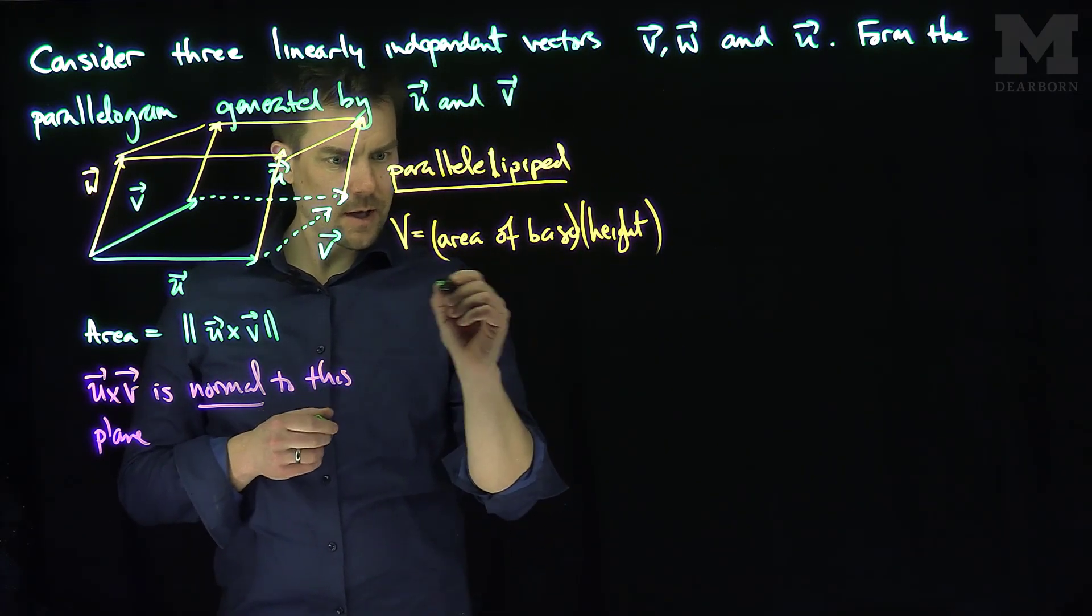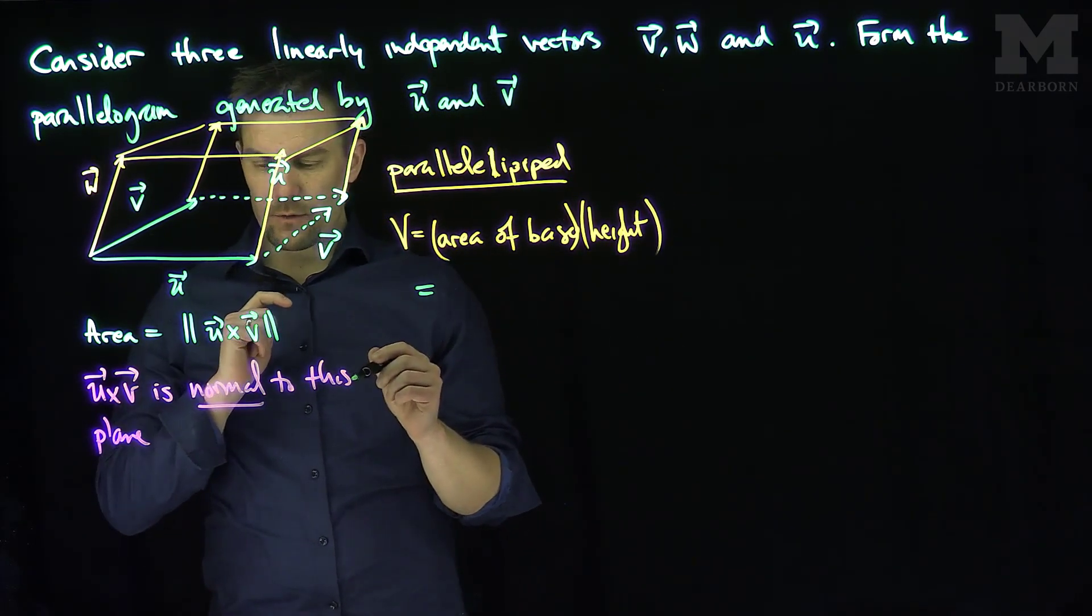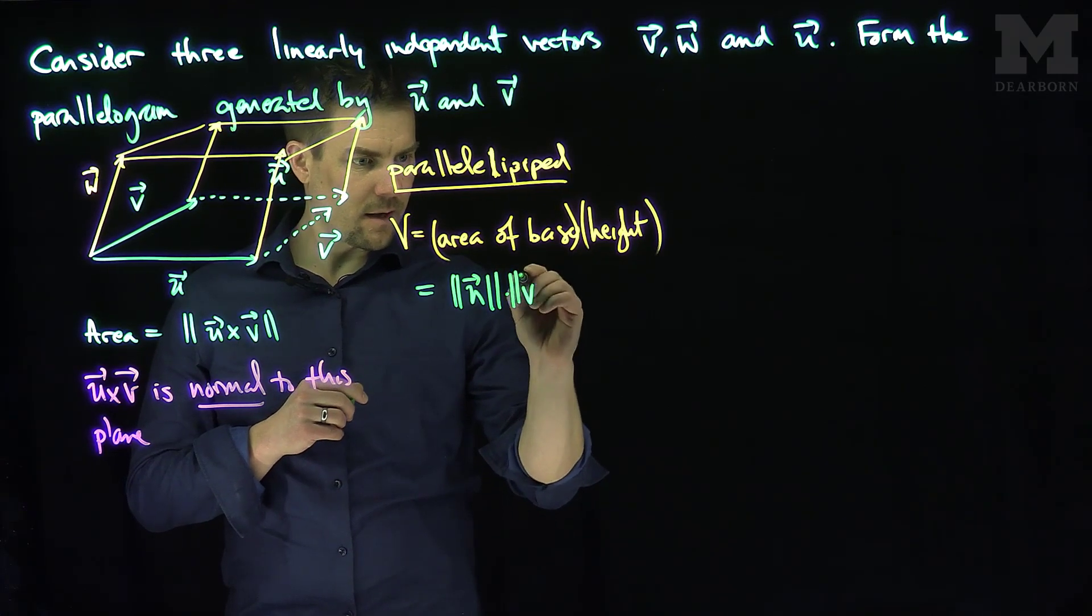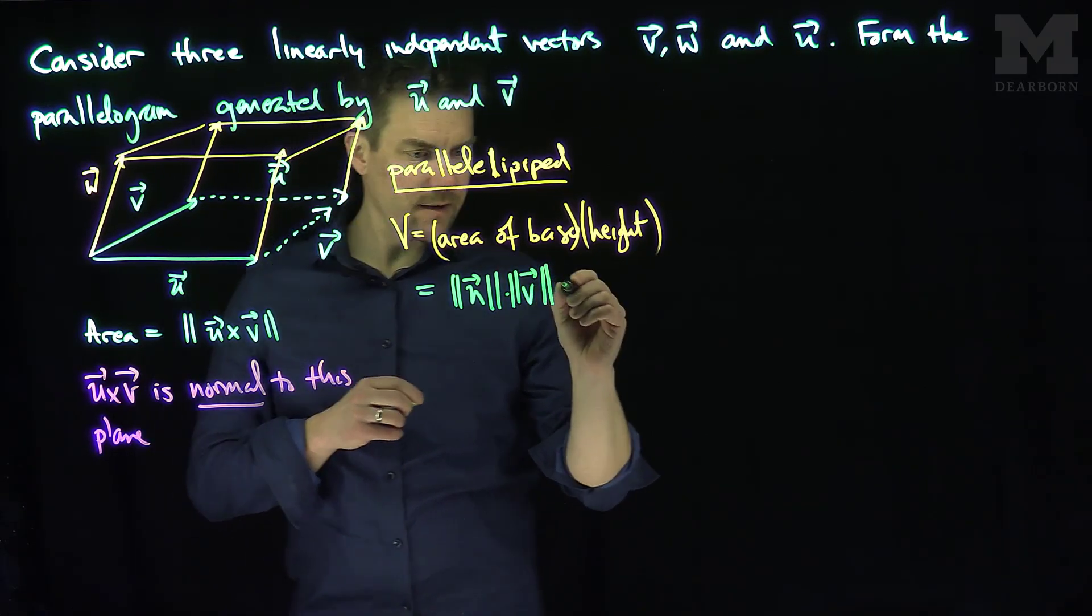Let's return to our area of the base formula. The area of the base is going to be the length of u times v, which is the length of u times the length of v times the sine of theta.